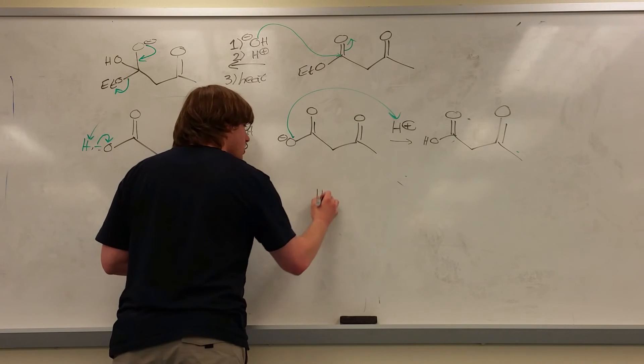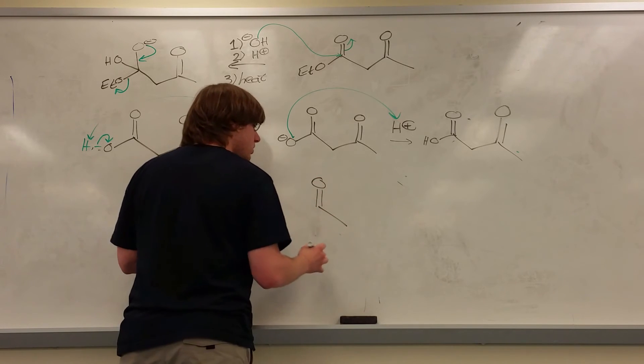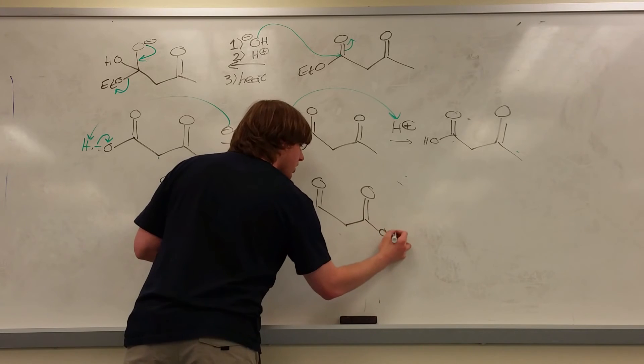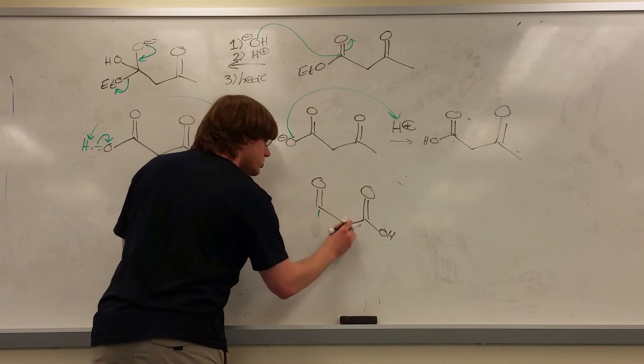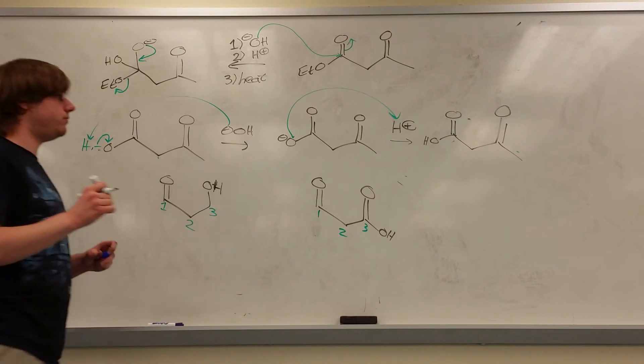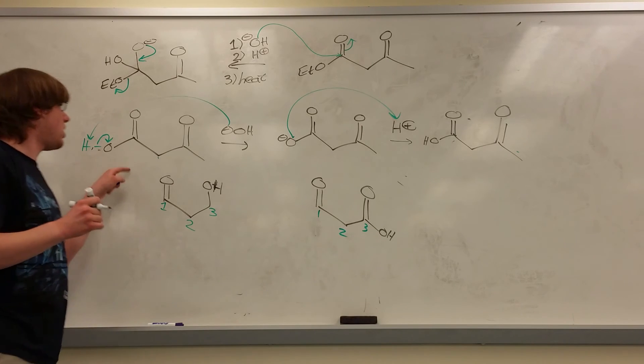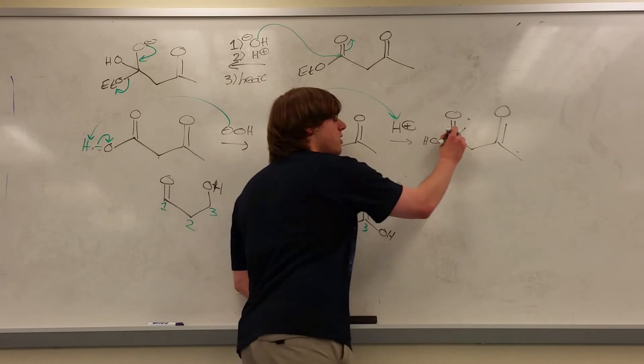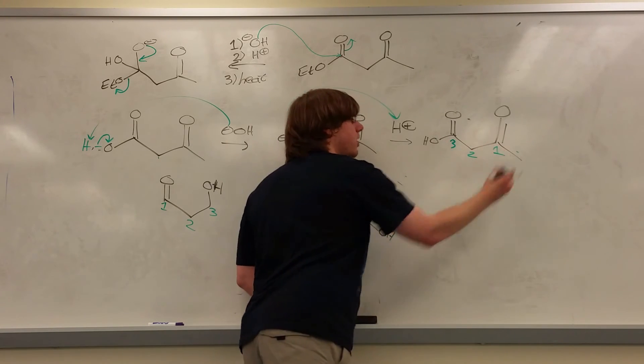Decarboxylation occurs when you have a carbonyl on one, an alpha carbon on two, and a carboxylic acid on three. One, two, three. And that's what we have here. We have a newly formed carboxylic acid that is three, two, and carbonyl on one.